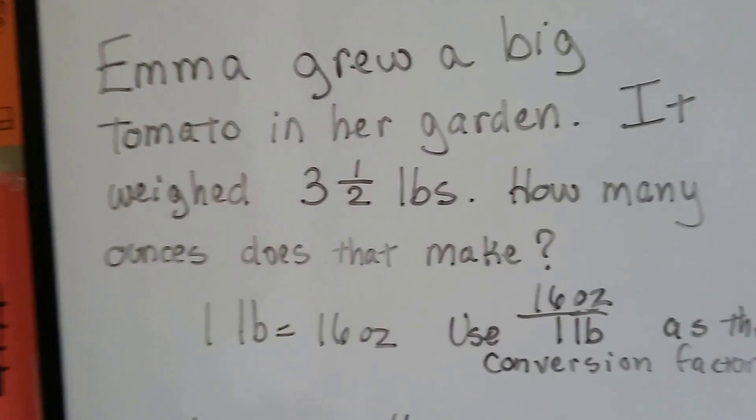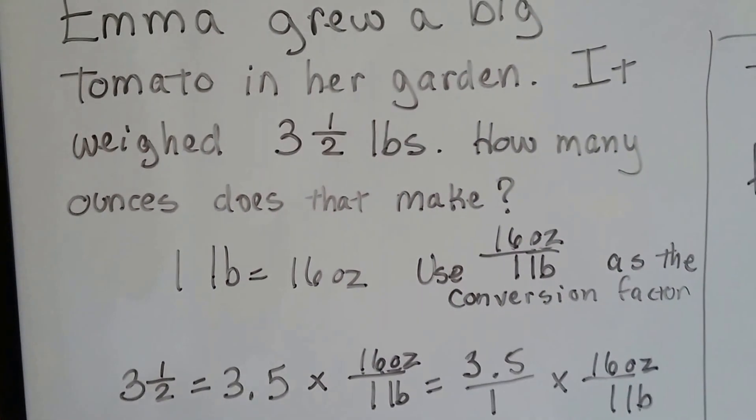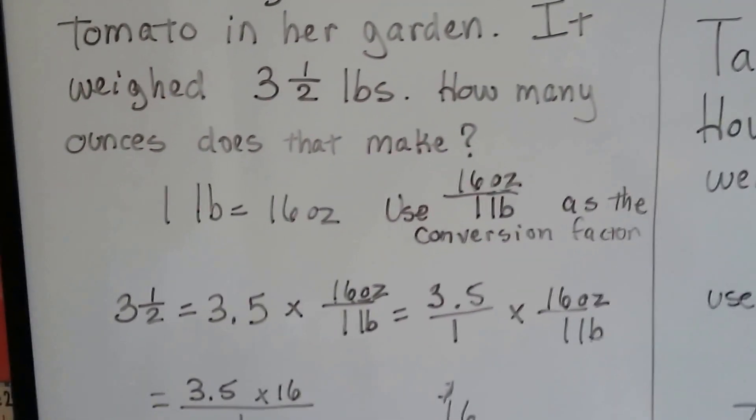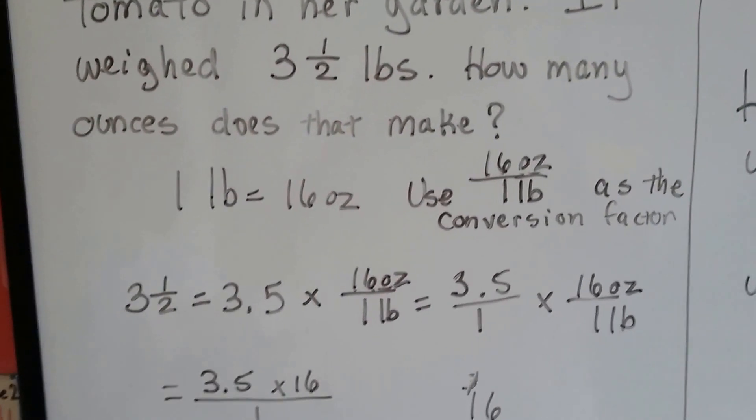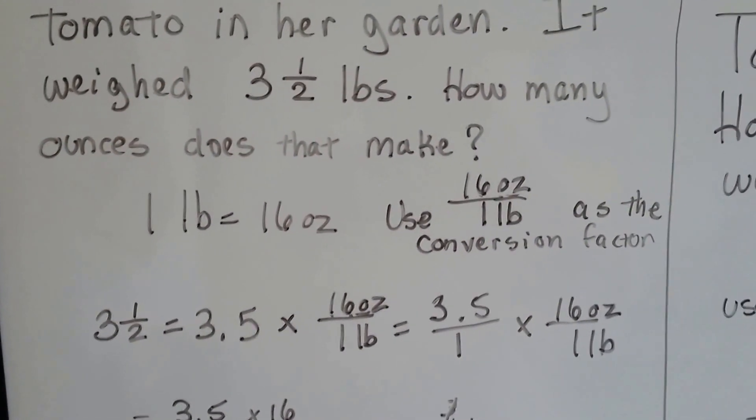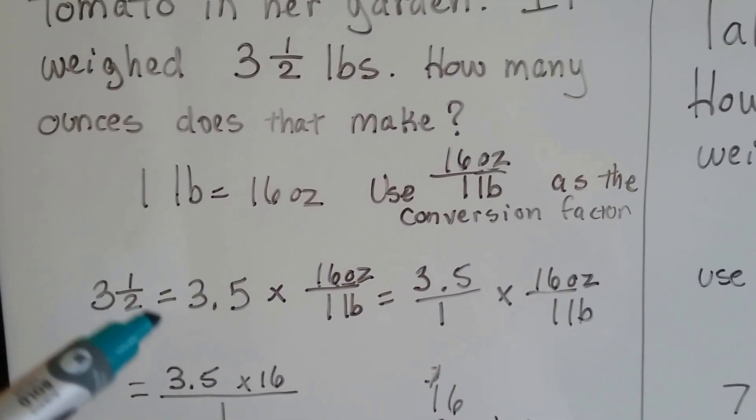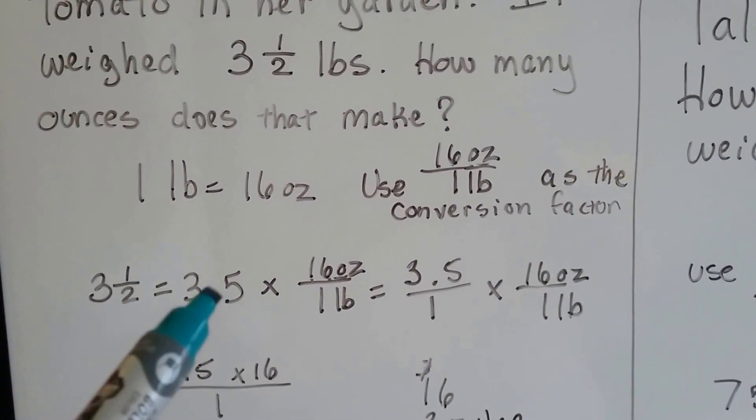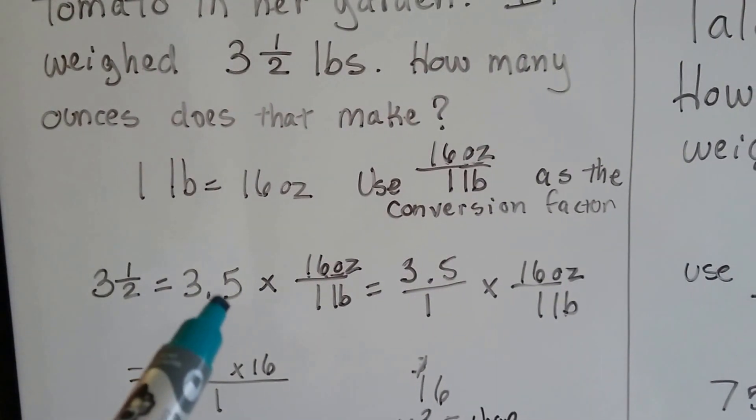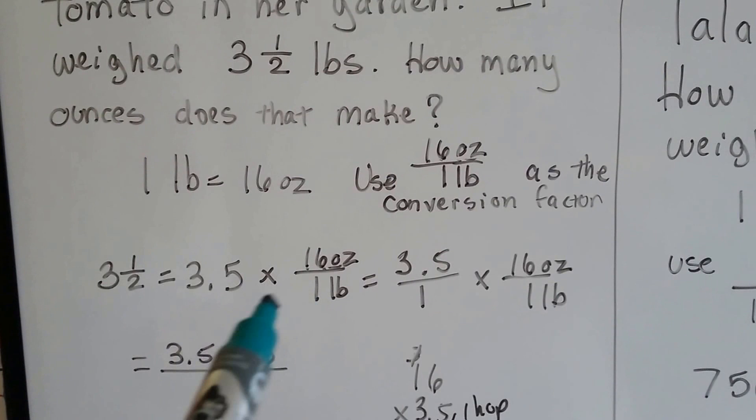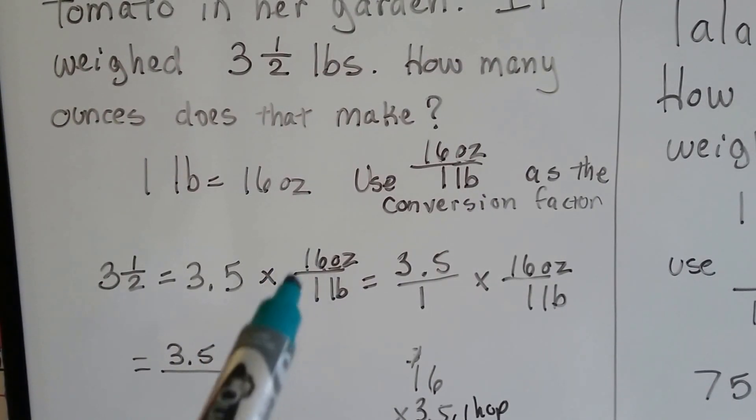Emma grew a big tomato in her garden, and it weighed three and a half pounds. Just one tomato. So how many ounces does that make? Well, one pound is equal to 16 ounces, so we use 16 ounces over a pound as the conversion factor. Three and a half is equal to 3.5, so we're going to use that because it's easier to multiply with decimals.